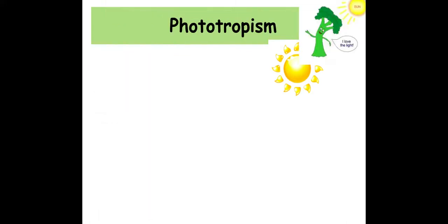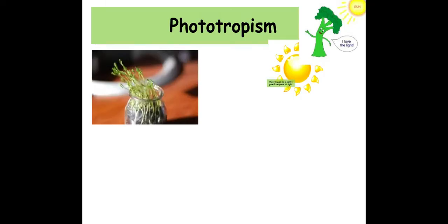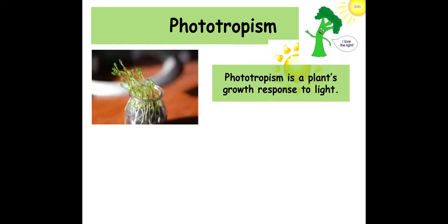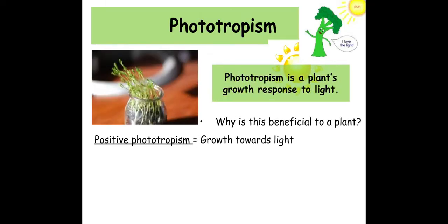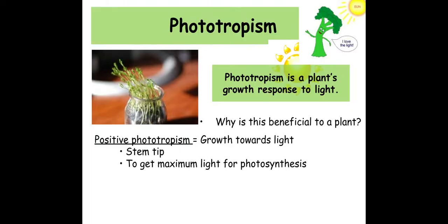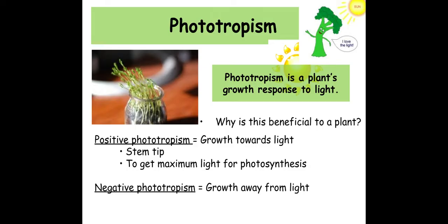There are a couple of tropisms we need to be aware of. Phototropism is the plant's response to light. Positive phototropism can be seen in the stem tips or shoots, and this helps to maximise light for photosynthesis. We see negative phototropism in the roots to help prevent them from drying out.